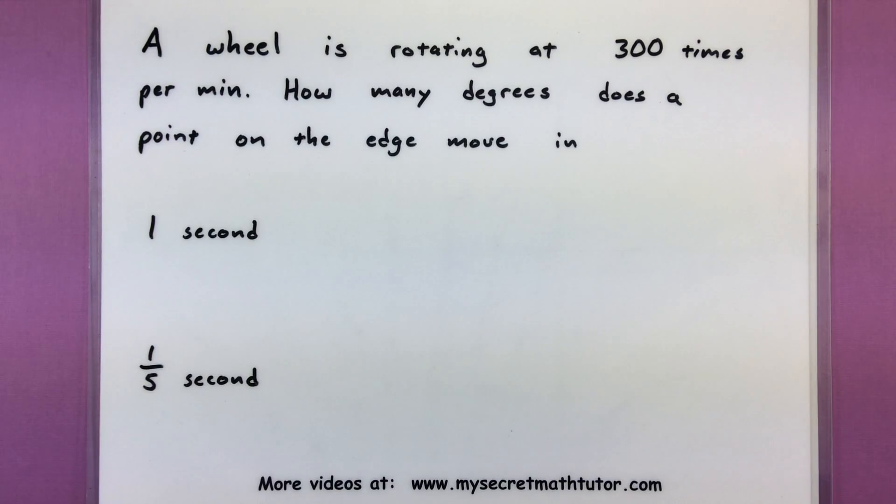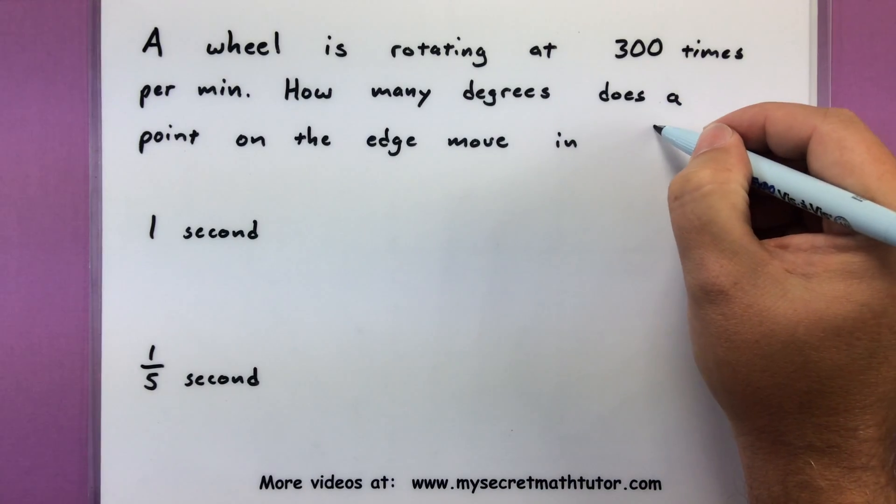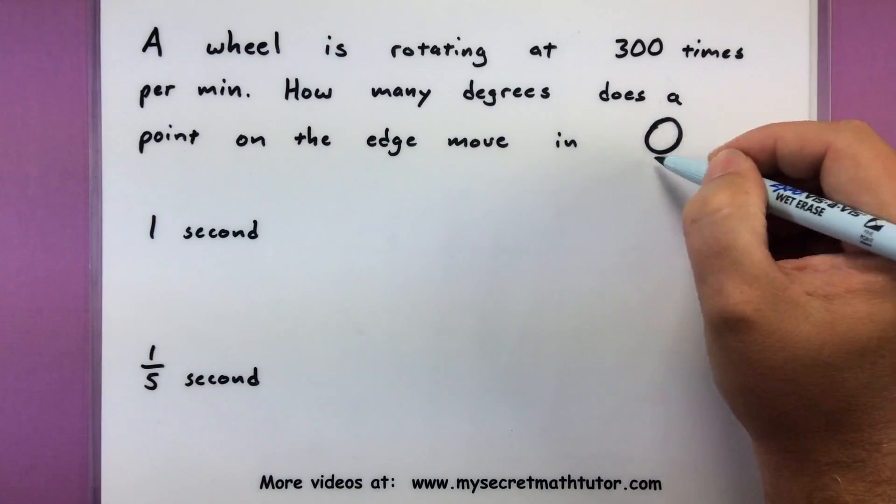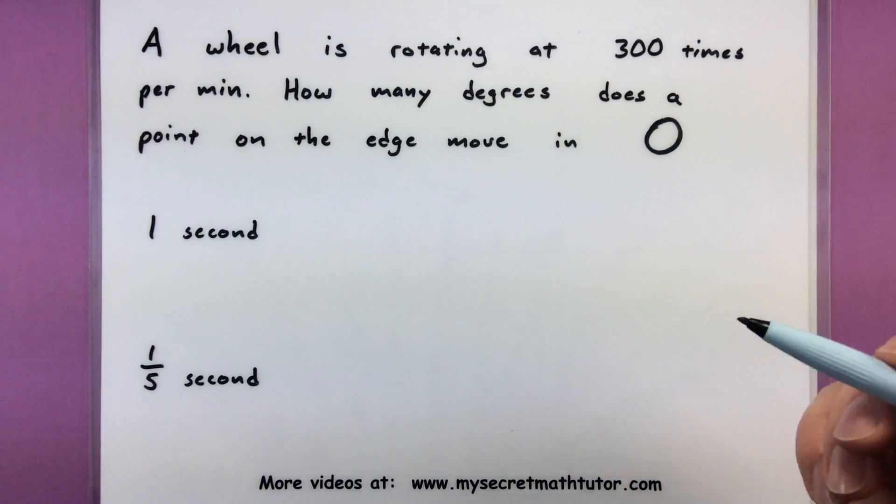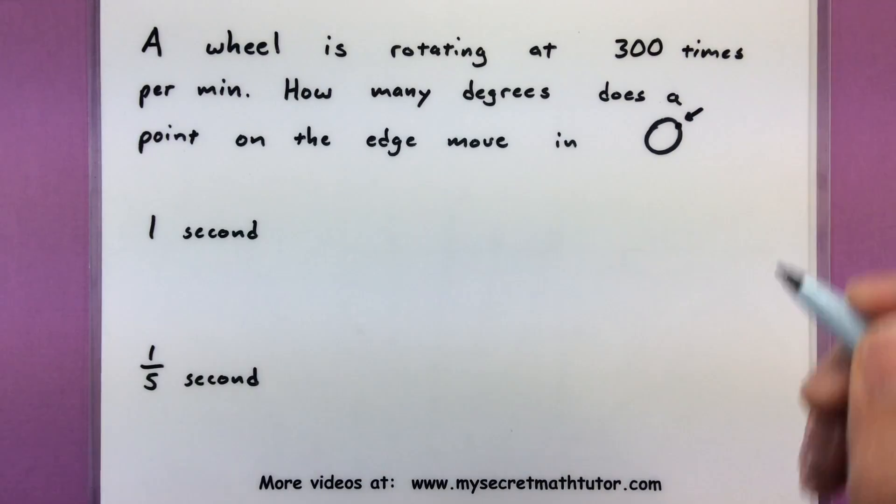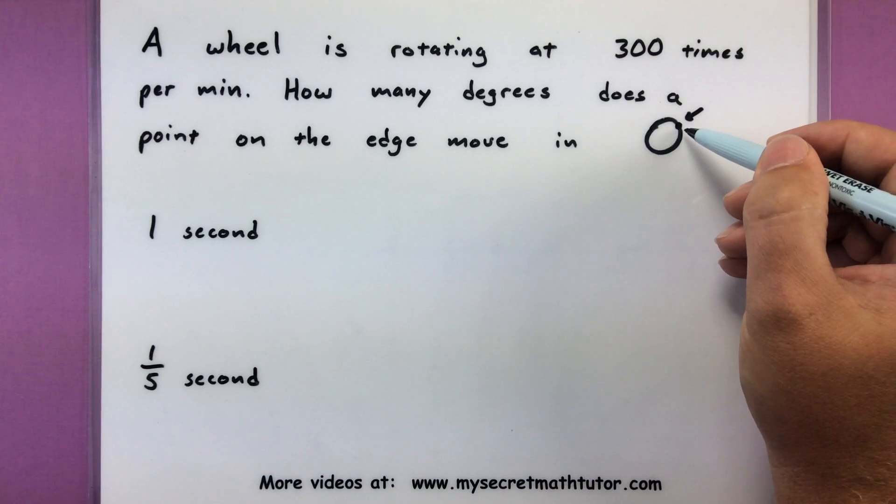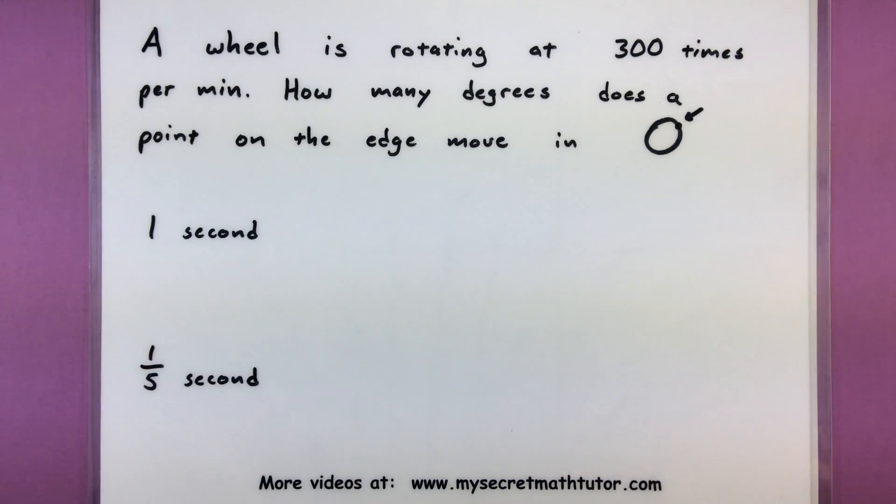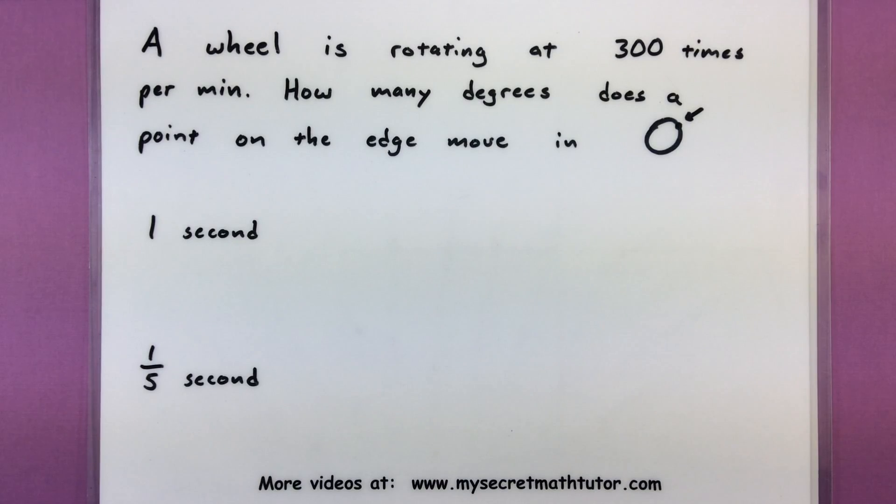For this first problem, I have a wheel that is rotating 300 times per minute. And what I really want to figure out is how many degrees does just a point on the edge of that move in just one second. So if we can imagine we have some sort of tire, it's rotating pretty fast if it gets around 300 times every minute. And then just here on the edge, I have this little point here that I want to keep track of, and I want to figure out how far does it move in just one second. As a follow-up to this, we'll also figure out how far it moves in one-fifth of a second.